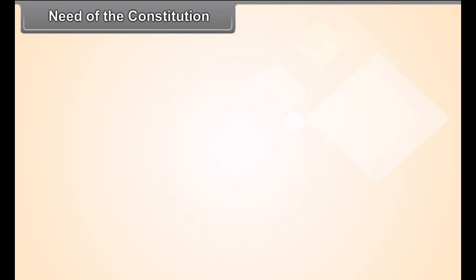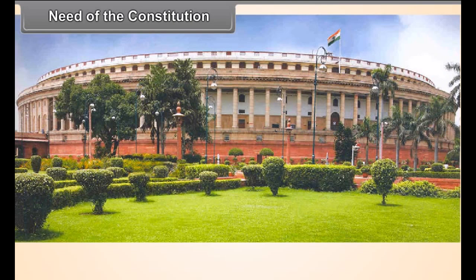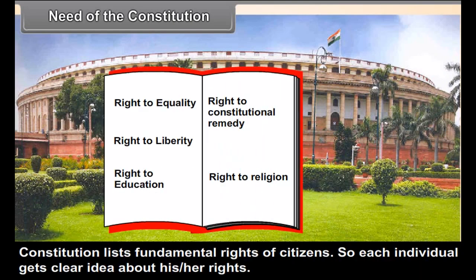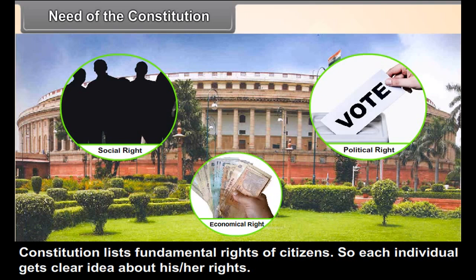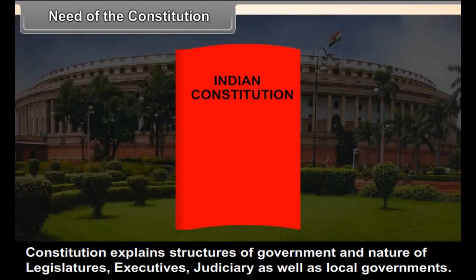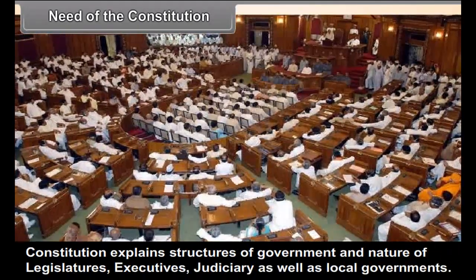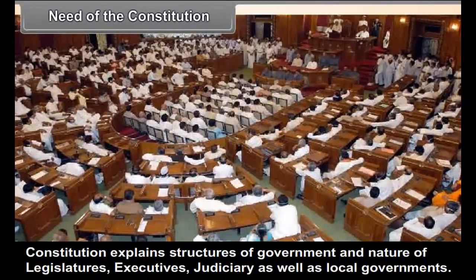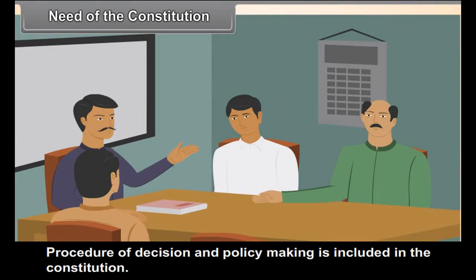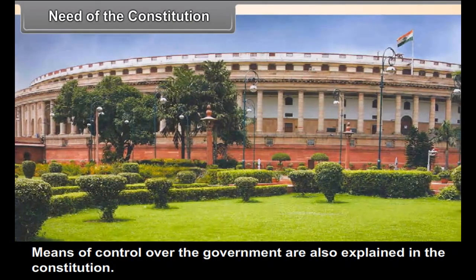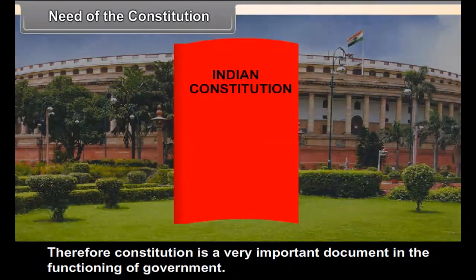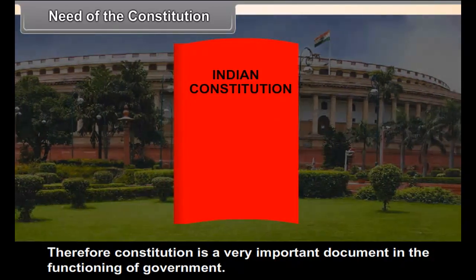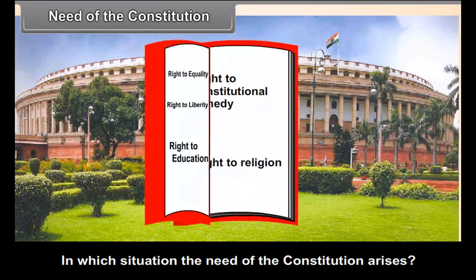Need of the Constitution. The Constitution lists the fundamental rights of citizens, so each individual gets a clear idea of his or her rights. It explains the structure of government and the nature of legislatures, executives, judiciary, and local governments. The procedure of decision and policy making is included in the Constitution, and means of control over the government are also explained. Therefore, the Constitution is a very important document in the functioning of government.